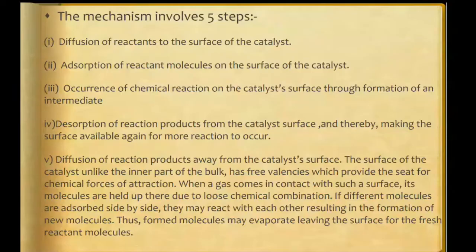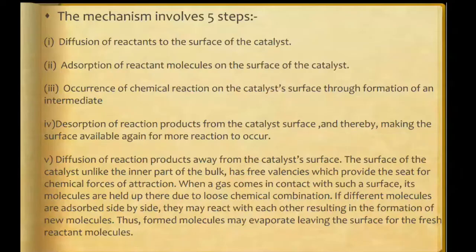During heterogeneous catalysis, the catalyst provides the surface to the reactant molecules. On the surface of the catalyst, there are some unbalanced forces called free valences. The reactant molecules diffuse towards the surface and get adsorbed on it. Once adsorbed, a chemical reaction between the reactants takes place, leading to the formation of a product. Once the product or an intermediate is formed, it gets desorbed from the surface of the catalyst so that the surface becomes available for further reaction.